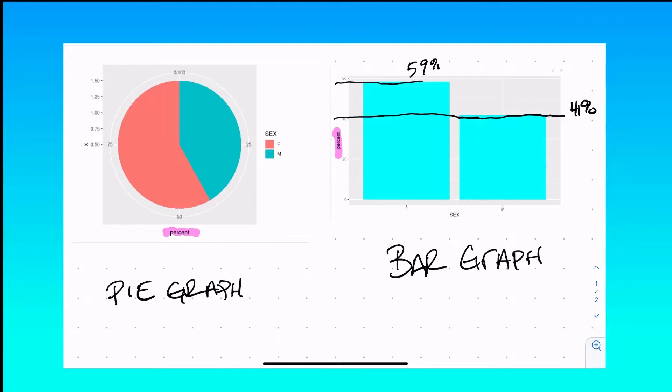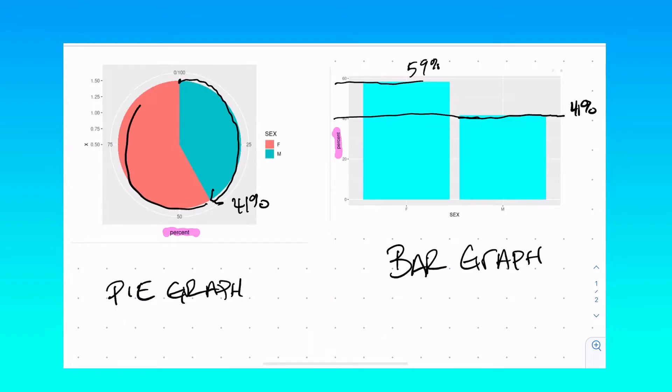Now moving over to the pie graph, which is the same data, you can see that approximately 41 percent, because it's less than half, is the male, and then 59 percent is female. We know it's less than half because if you draw a line down the center, that would be the 50 percent cutoff. So it displays the same data.